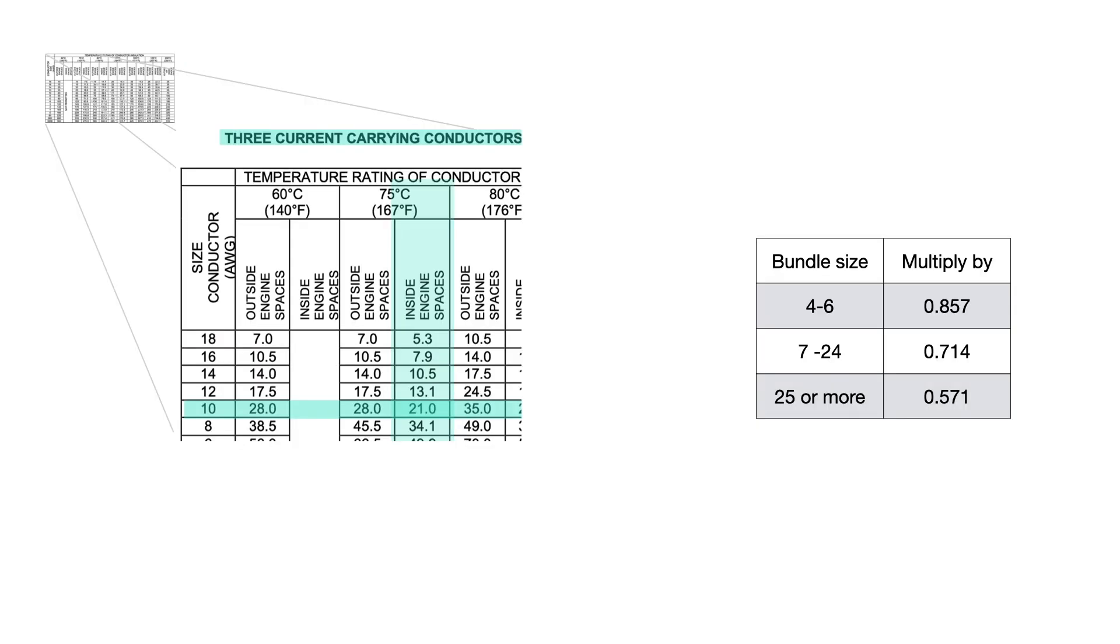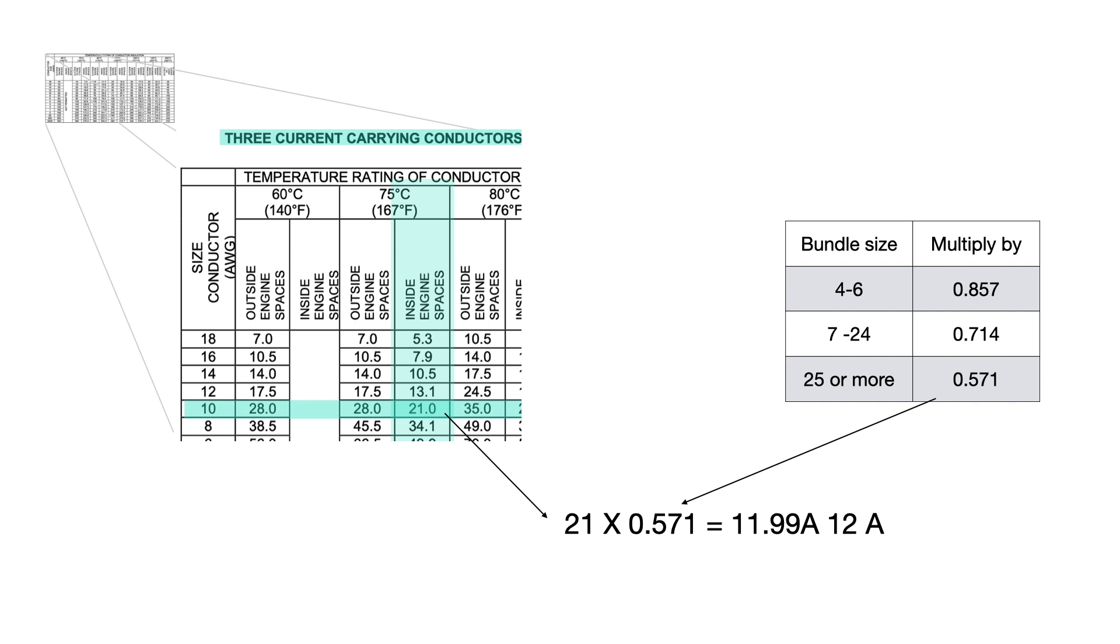However, if our cables are bundled more than this, we must apply further corrections as shown here. So in our example, we found our cable had an ampacity rating of 21 amps from the ampacity table for a bundled conductor. But if we bundled it in a conduit with more than 25 other cables, it cannot shed heat as well. So we must apply the correction factor of 0.571. So to do this, tap into the calculator, 21 times 0.571, and we get 11.99 amps. So let's call it 12 amps.